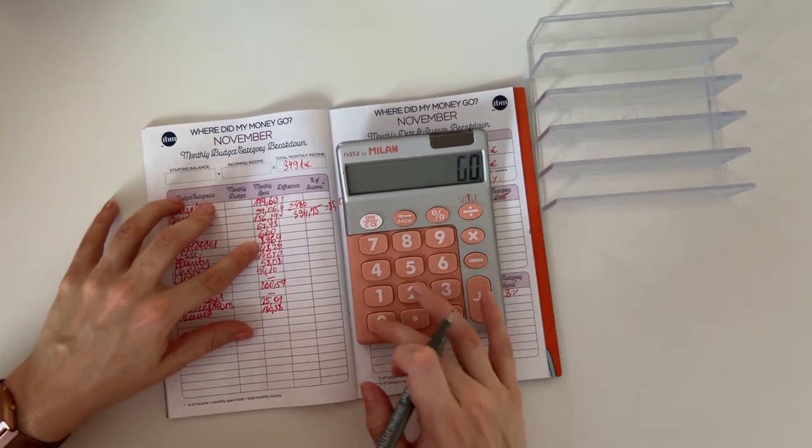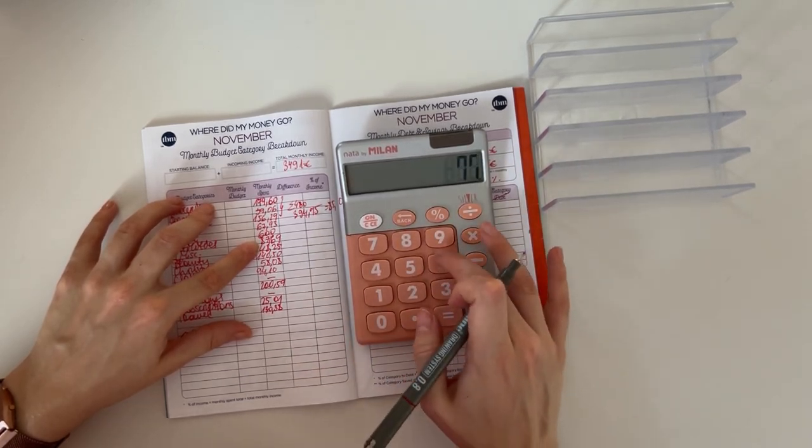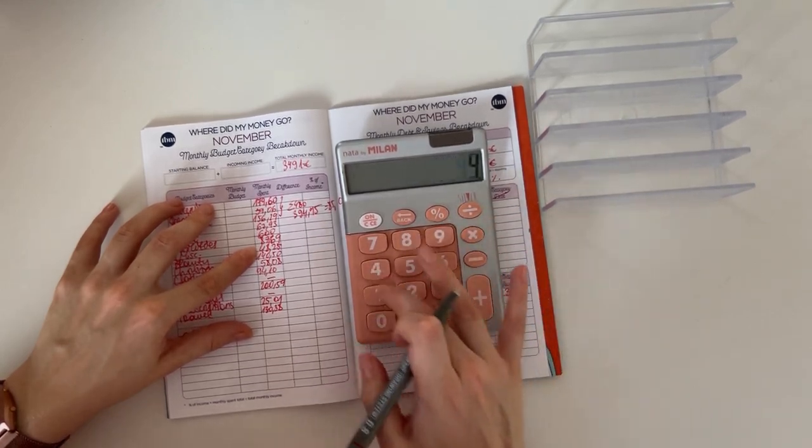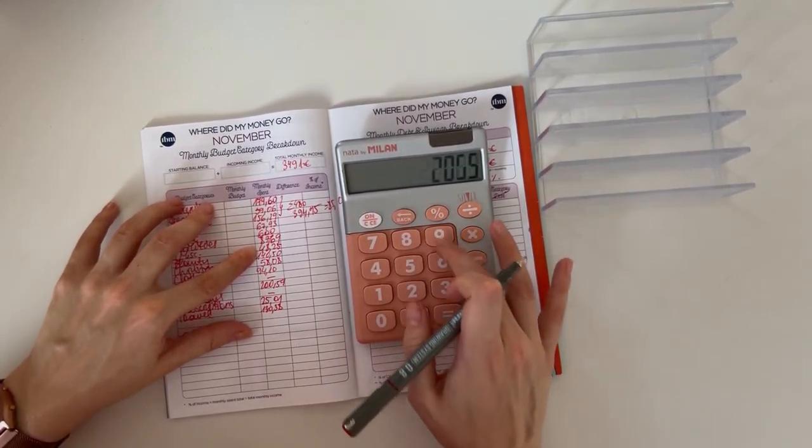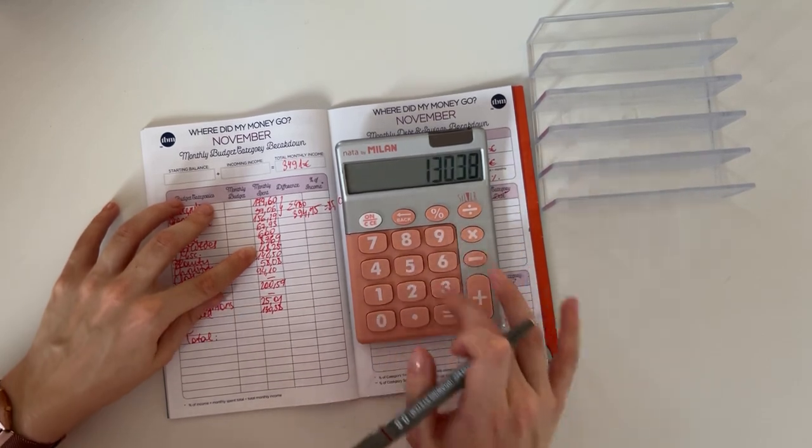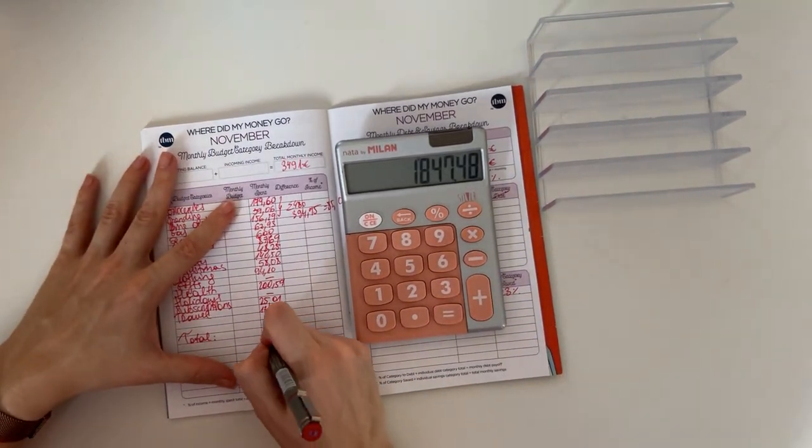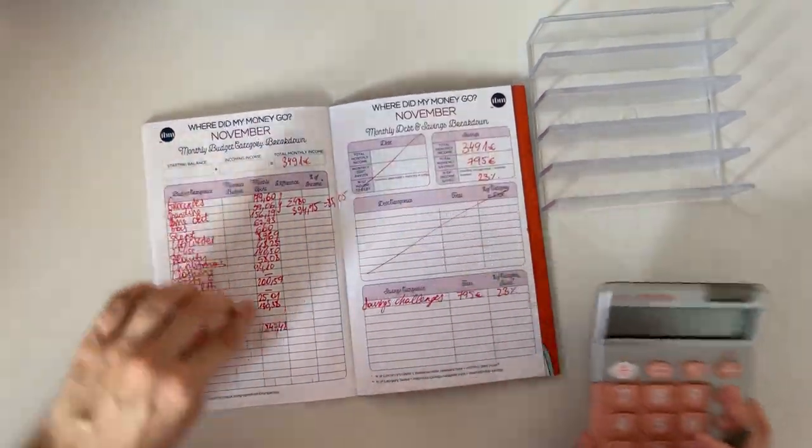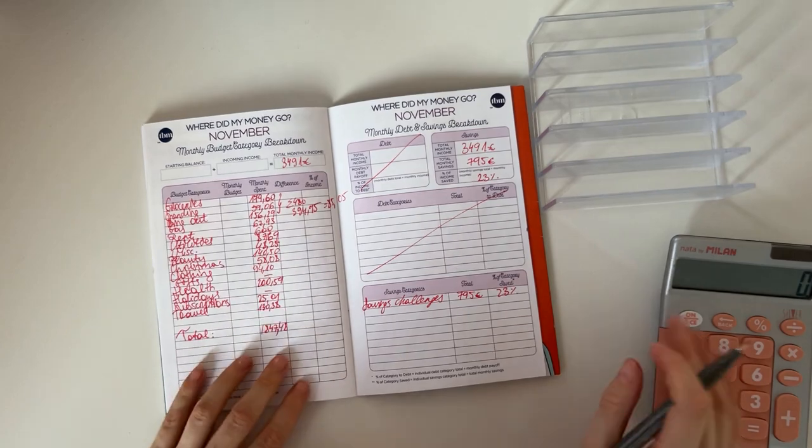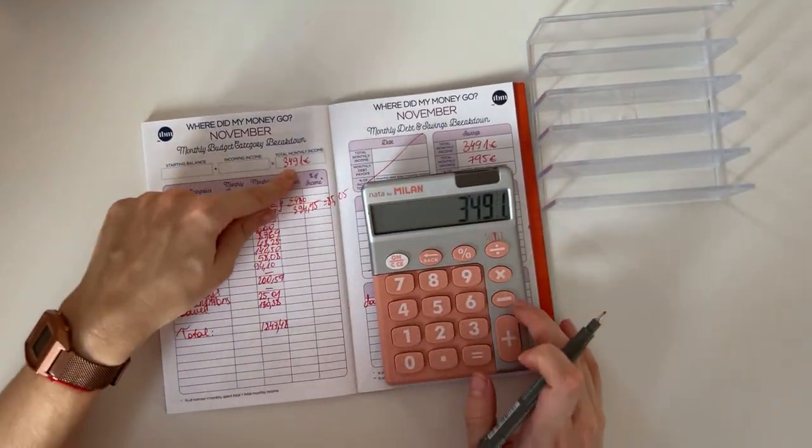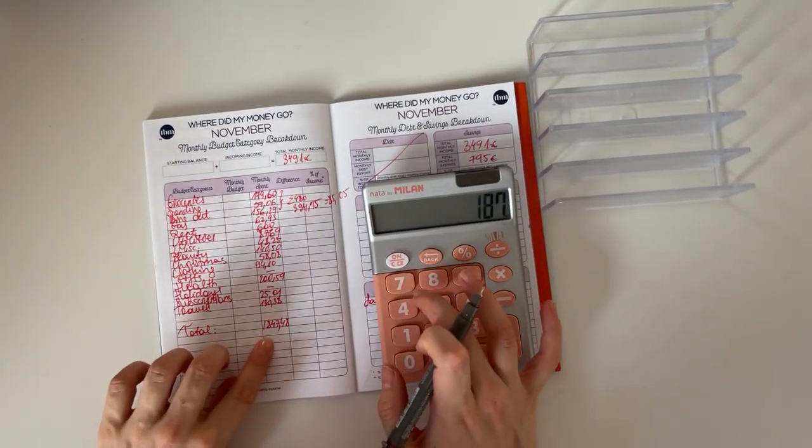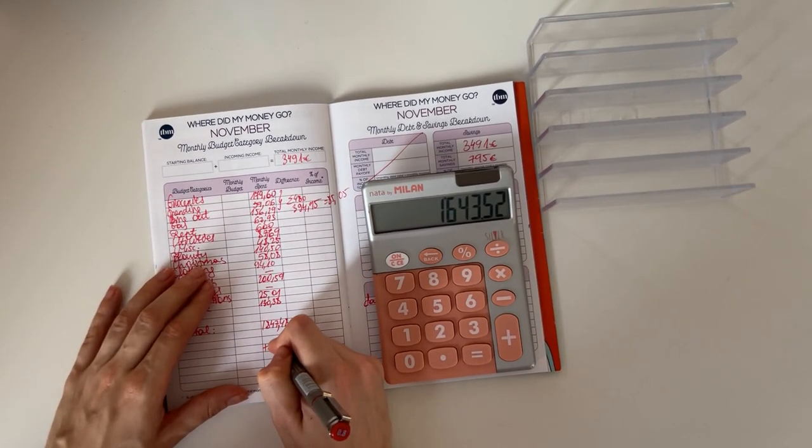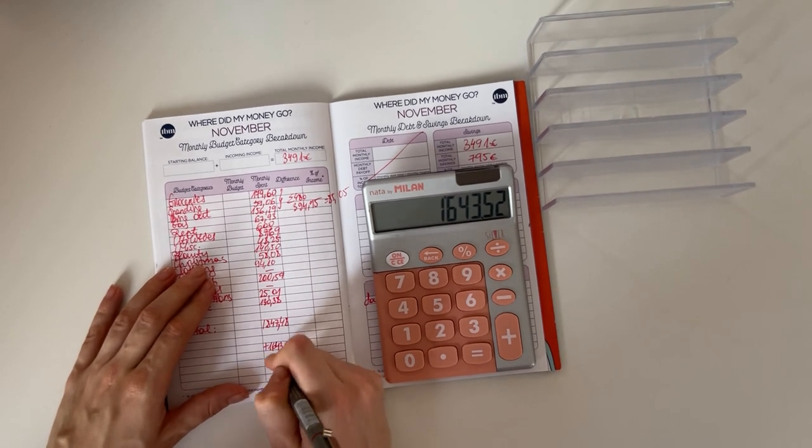So in total, let's count and see how much we spent this month. We have 1,847.48 euros in the expenses for this month. And if we take the income total income and minus the total expenses, we have a balance of 1,643.52 euros.